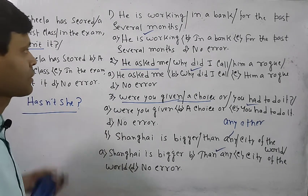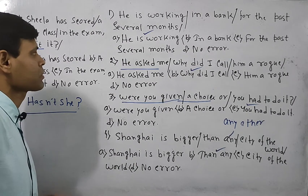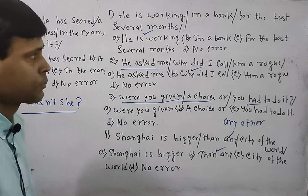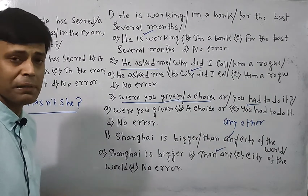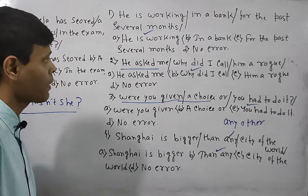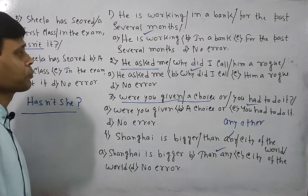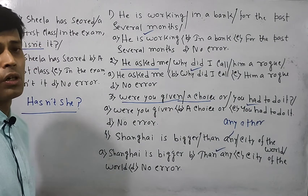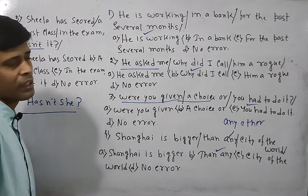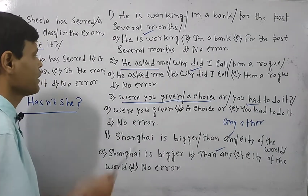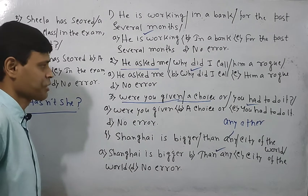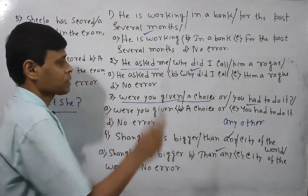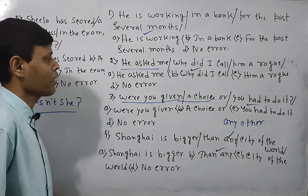To recap: 'He is working in a bank for the past several months' — the sentence belongs to the present perfect continuous tense, not present continuous tense. We should write 'He has been working in a bank for the past several months.' In the second question, 'He asked me why did I call him a rogue' — the first part is a statement but the second part is written in interrogative format. It should be in statement format: 'He asked me why I called him a rogue.'